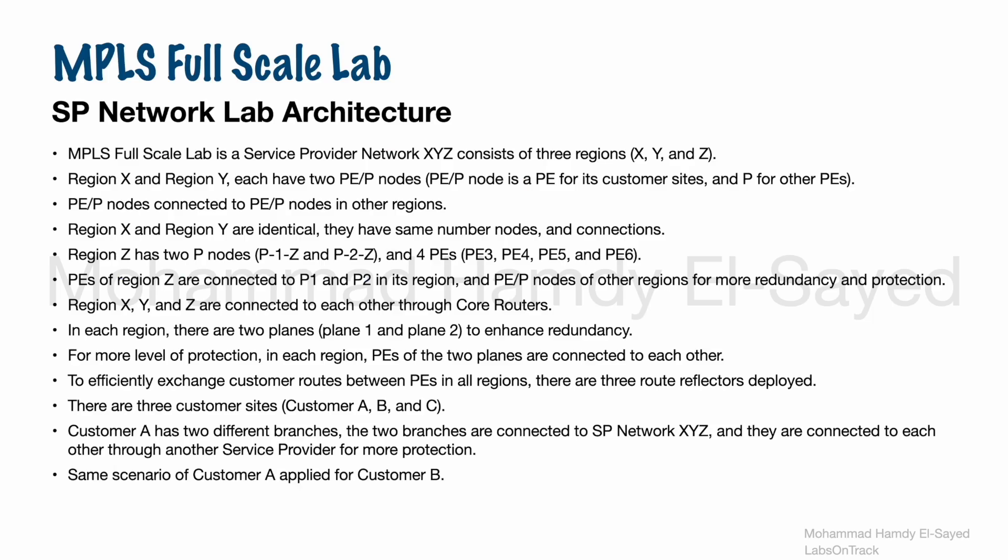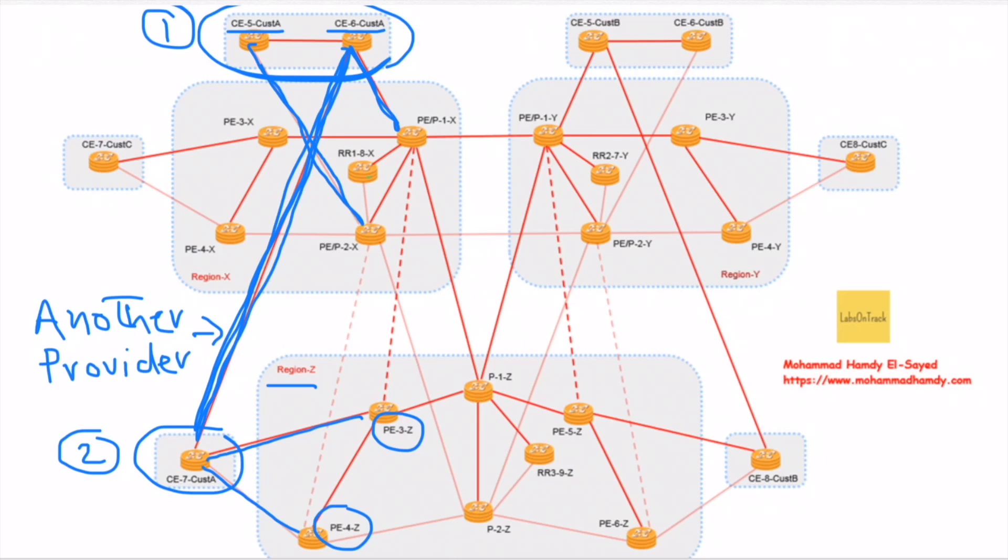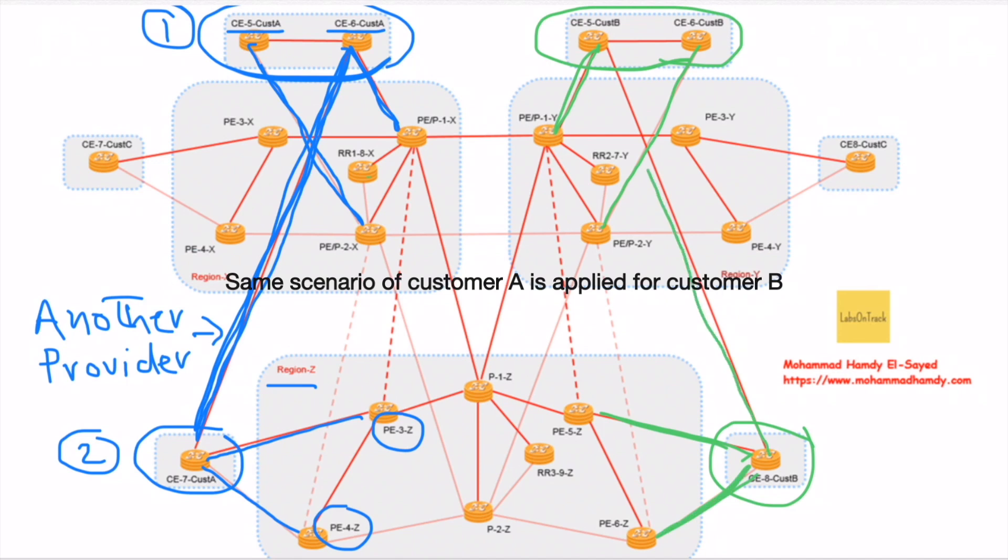We have same for customer B. It has the first branch connected to region Y, the second branch is connected to region Z, and both branches of customer B have direct connectivity for more protection via another service provider.